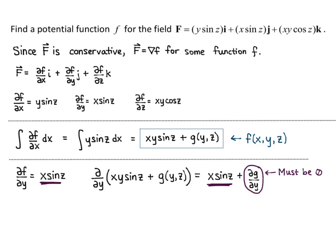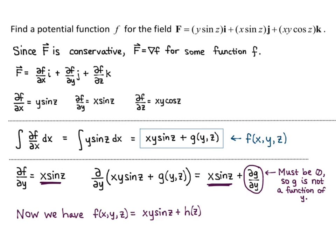That leaves us with ∂g/∂y must equal zero, which means g is not a function of y — it's at most a function of z. So now we have f(x, y, z) equals xy sine of z plus h(z), where h is some function of z.